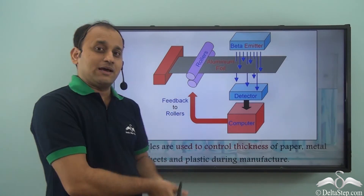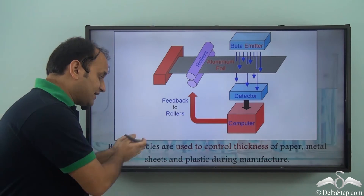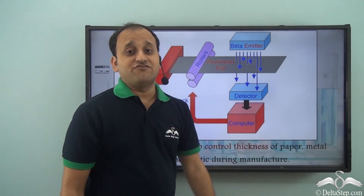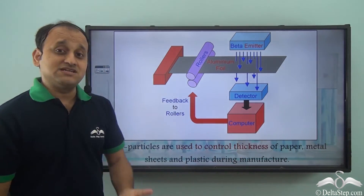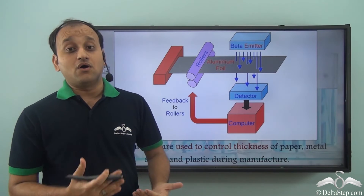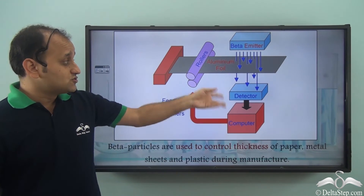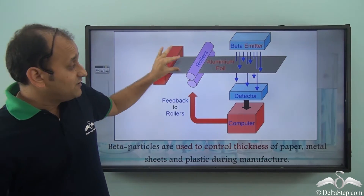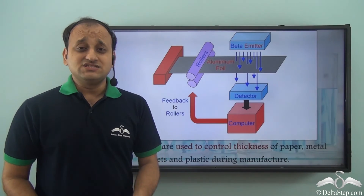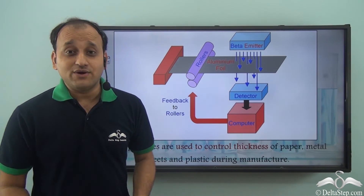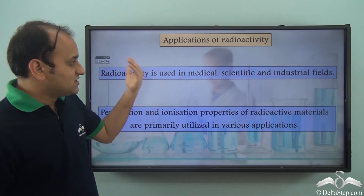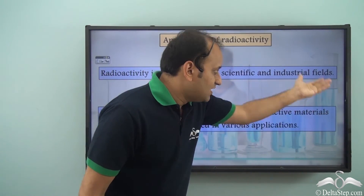Beta particles are used to control the thickness of paper, metal sheets, and plastic during manufacture. Beta particles have penetration power and can penetrate thin sheets of paper or aluminium. This property is used to calibrate rollers so that sheets of the desired thickness are produced — one of the most important industrial applications of radioactive elements.